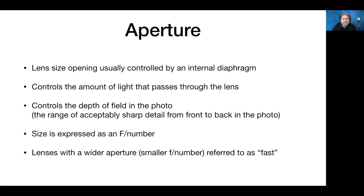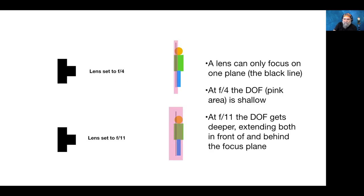Aperture or f-stop: think of it like a water faucet — adjusting it controls how much light flows through the lens, and it also controls the depth of field. We express the aperture as an f-number. Wider apertures with smaller f-numbers are referred to as fast. The lens can only focus on one plane, so at f4 the depth of field is pretty shallow, but as you stop down to f11, it gets deeper, extending both in front of and behind the focus plane.